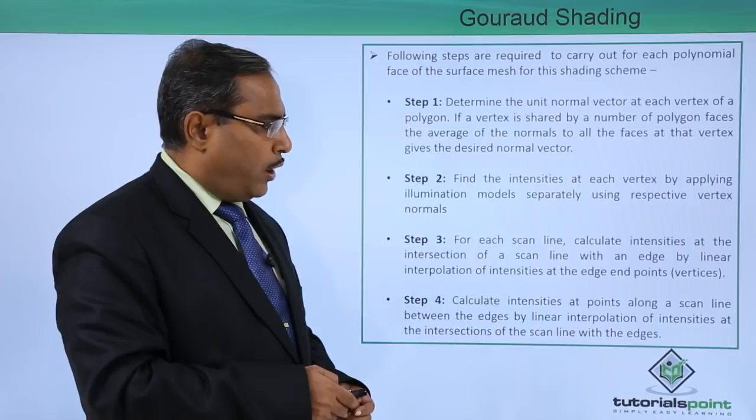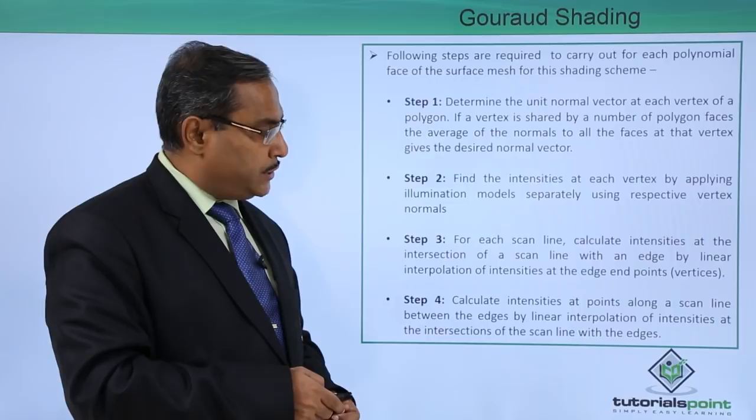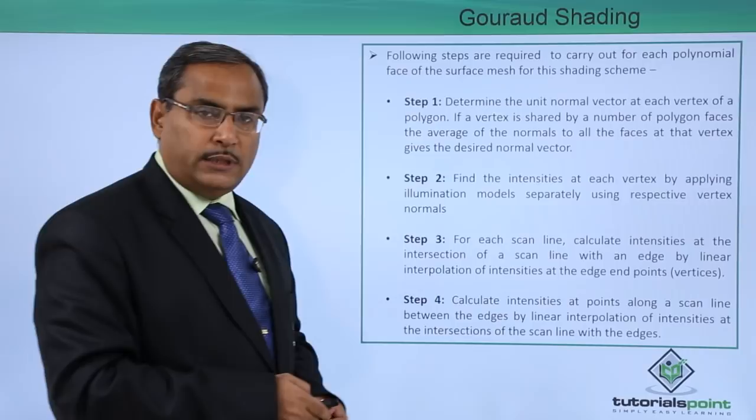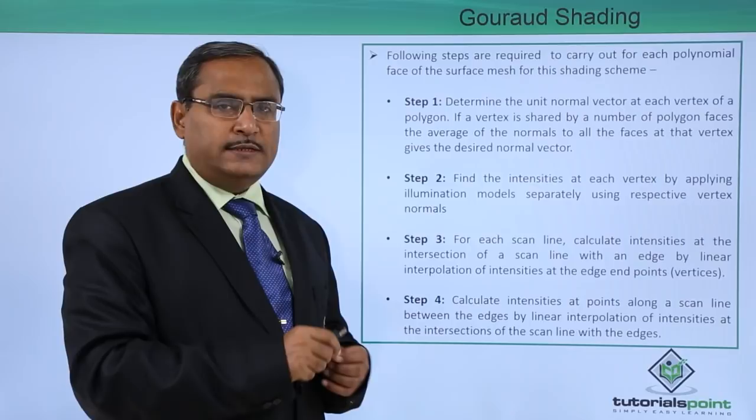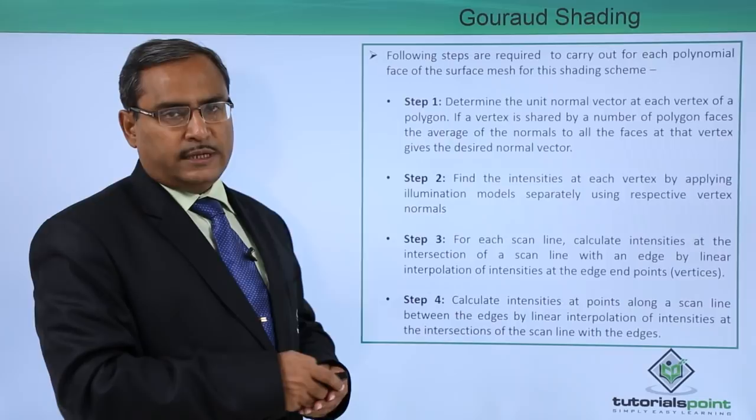Step 4: calculate intensities at points along a scan line between the edges by linear interpolation of intensities at the intersections of the scan line with the respective edges. We are calculating the respective intensities not by using the local illumination model for each point, but by using interpolation for the points falling on the scan line.